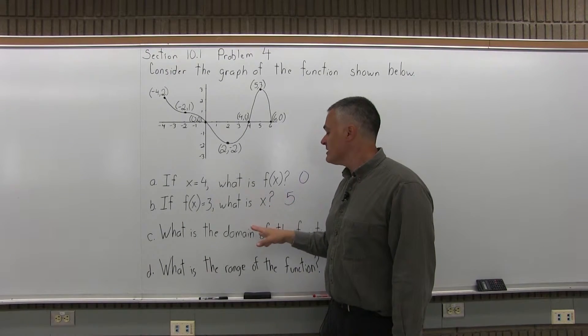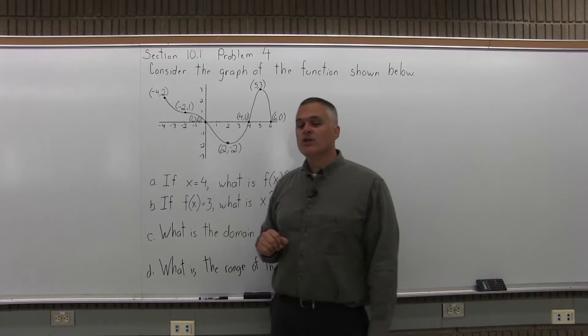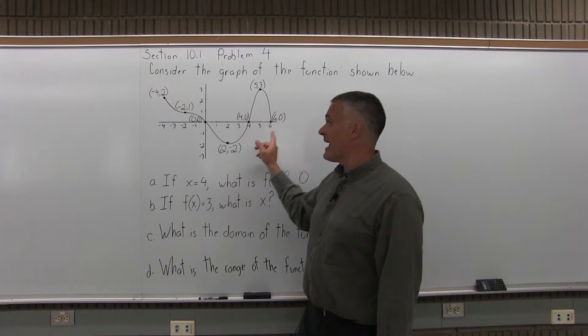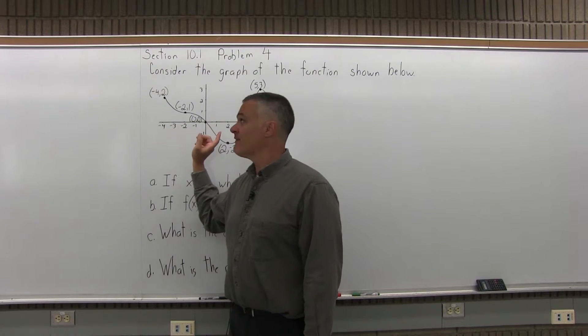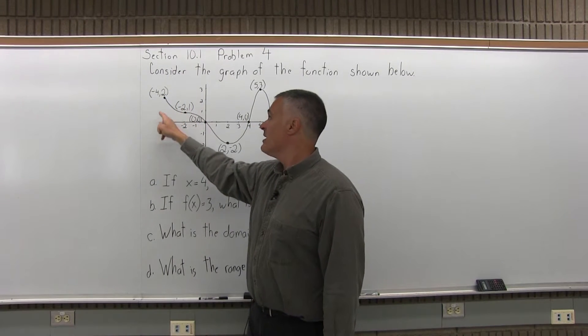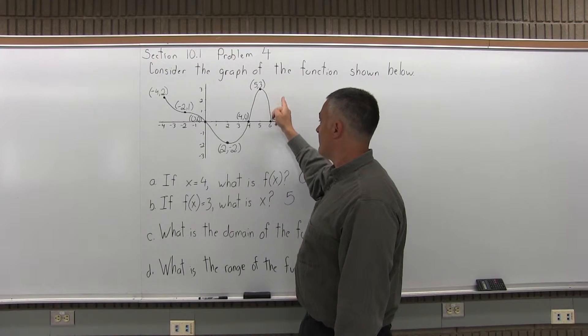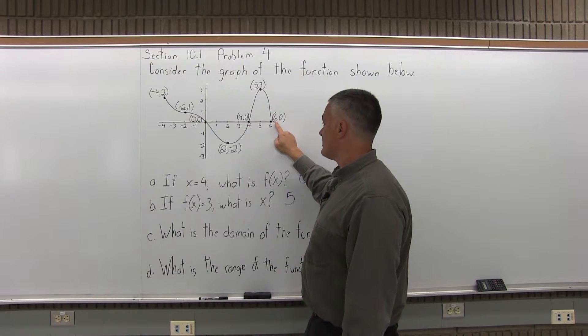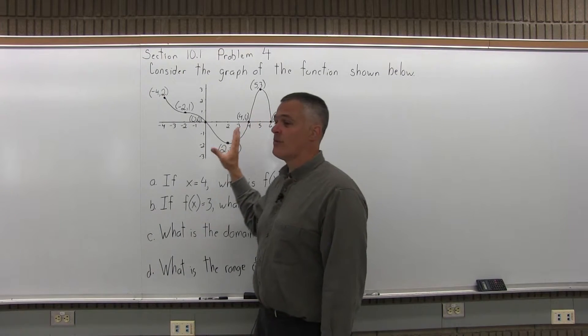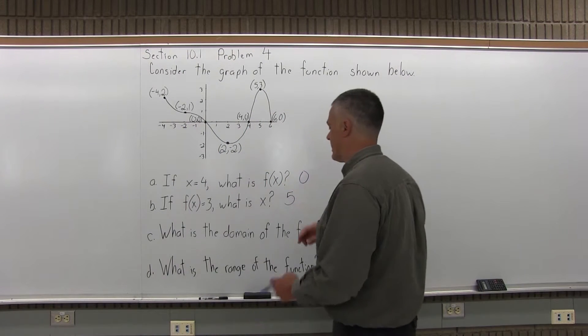Part C, what is the domain of the function? The domain is what you can use as an input value. And in terms of seeing the graph, it's what x values are covered by the graph. So the first x value on this graph is negative 4, and it continues along until the very rightmost point on the graph is labeled with a point that has an x-coordinate of 6.